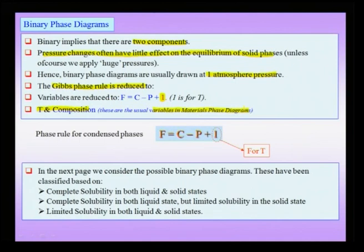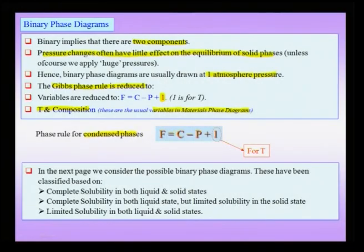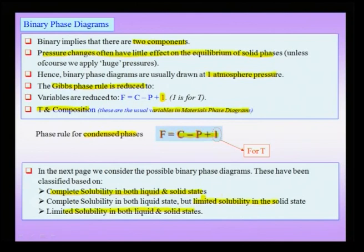Temperature and composition are the usual variables in a materials phase diagram. The composition could be in atom percent, weight percent, or expressed in mole fractions. The phase rule for condensed phases at constant pressure is F equals C minus P plus 1. We will classify possible binary phase diagrams based on solubility: whether there is complete solid solubility in both liquid and solid states, complete solubility only in the liquid state with limited solid solubility, or limited solubility in both states.